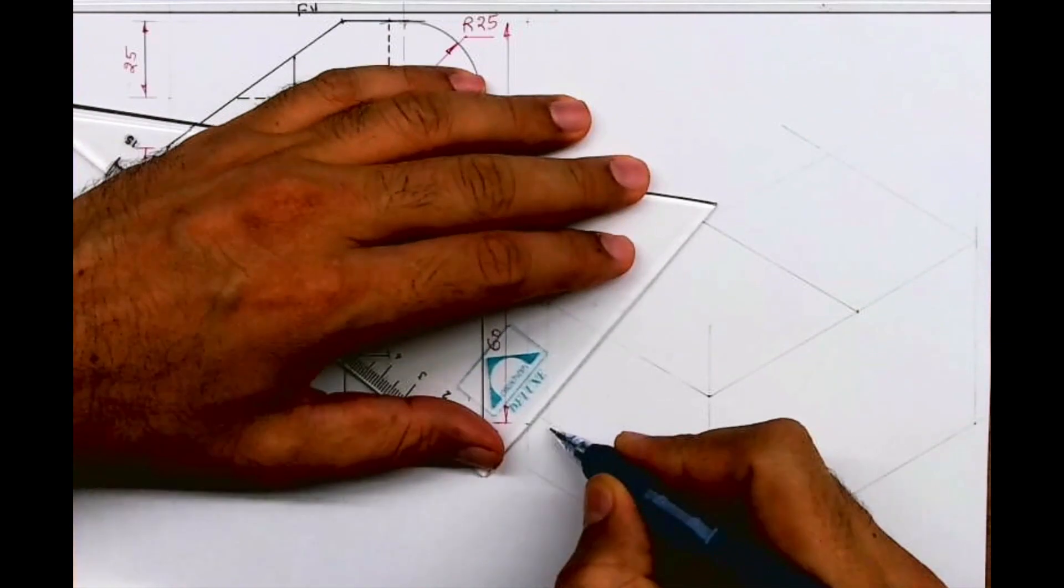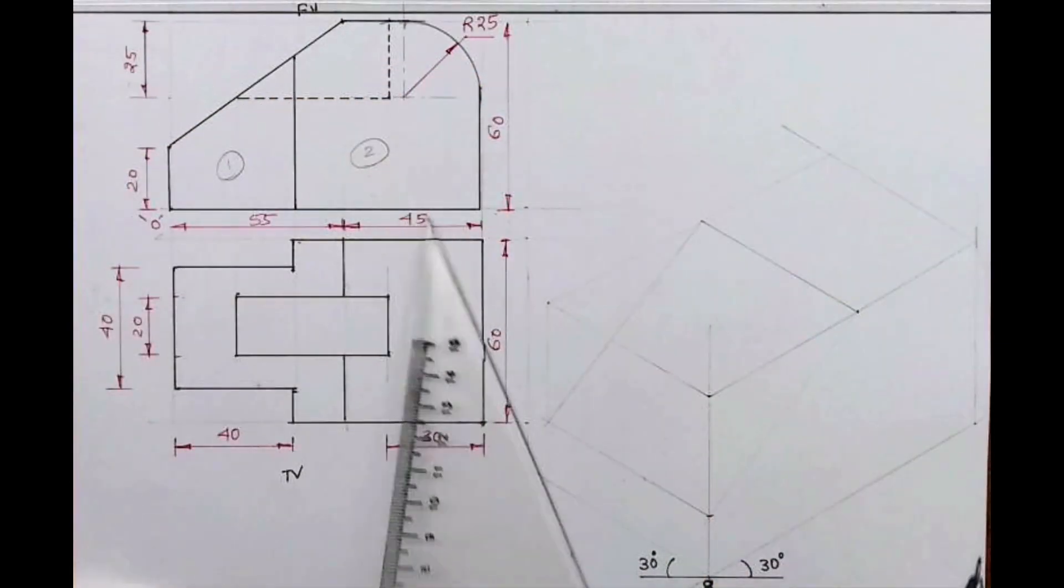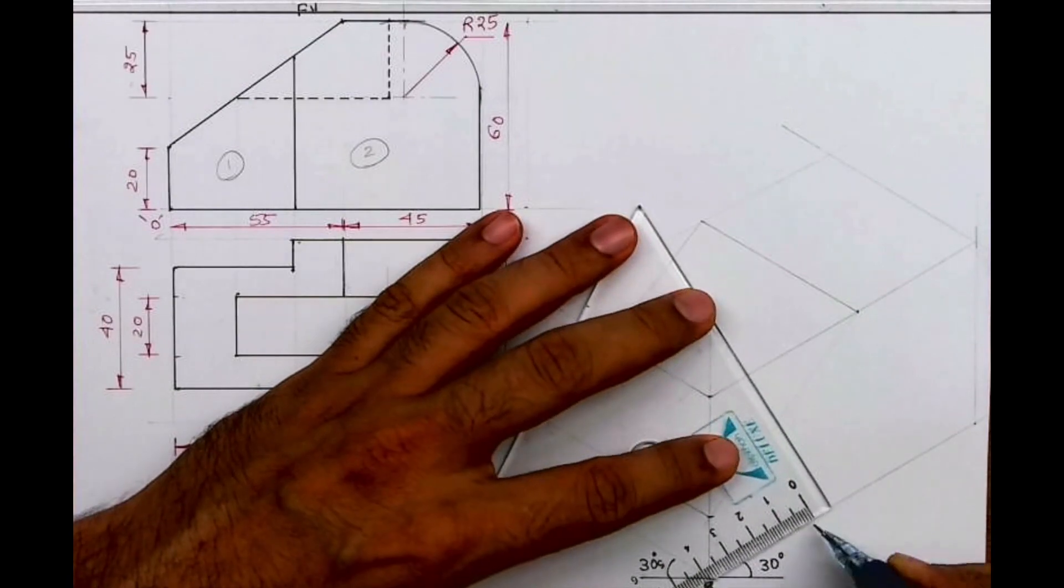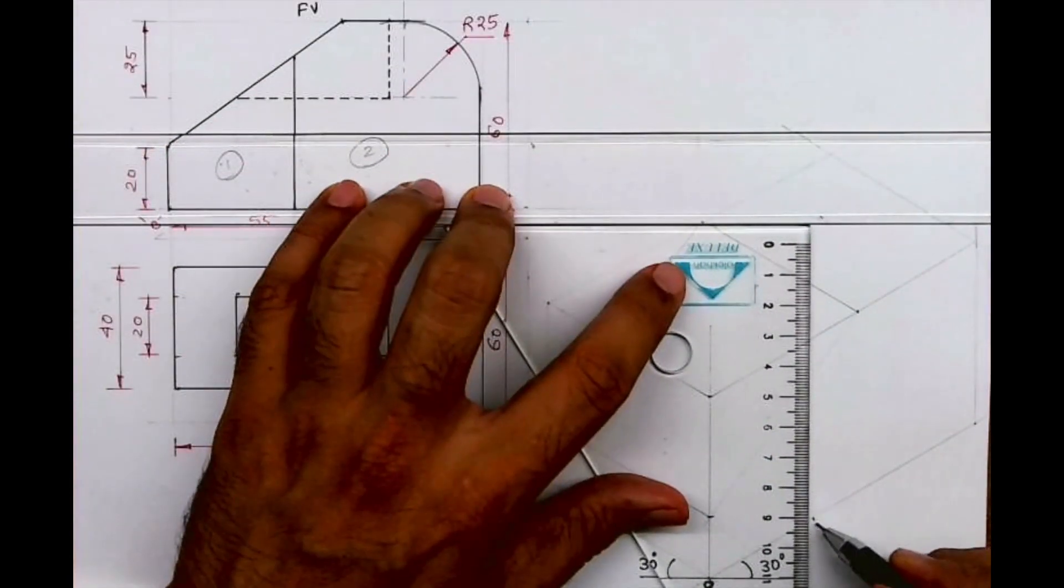See, I will join this to this. Then how much is this? 40. So I will take 40 from here. I'll go straight up.